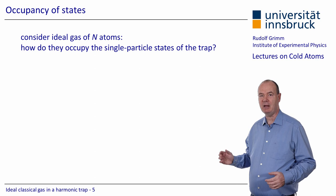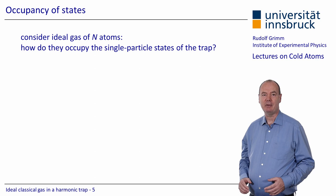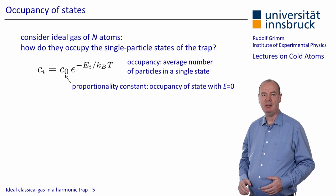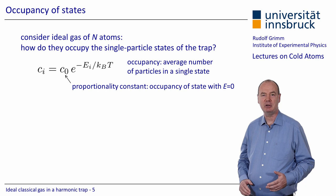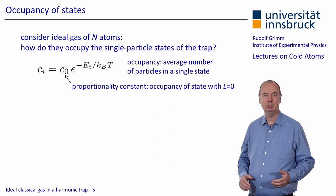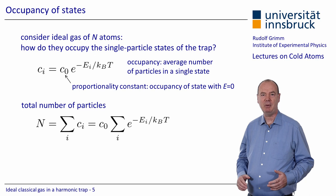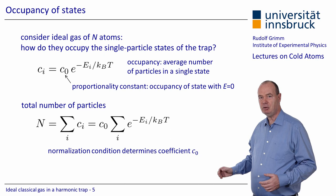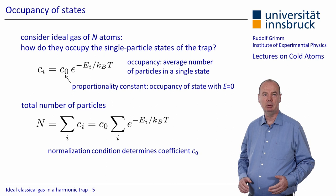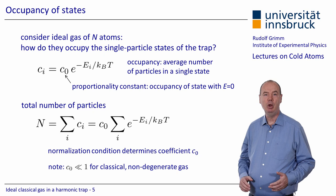The Boltzmann factor allows us to calculate the occupancy of states in the trapping potential. We consider an ideal gas of N atoms and want to know how they occupy the single particle states of the trap. The occupancy is defined as the average number of particles in a single state, here with index i, and c_i are the corresponding coefficients. C_0 appears as a proportionality constant and corresponds to the occupancy of a state with energy zero. The normalization condition connects the particle number N with the coefficient C_0, which is much less than 1 in the classical non-degenerate regime.